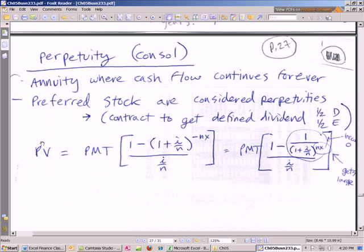Perpetuity model. Here's our formula, present value of an annuity. But we've got to think about this. If it's forever, what happens to this right here?